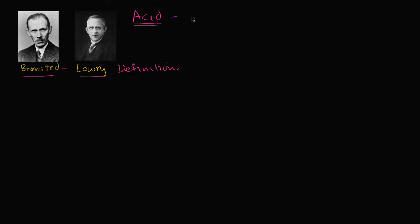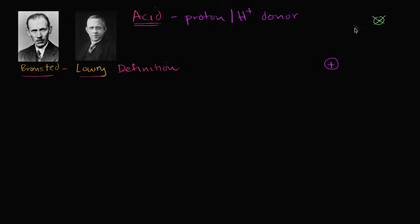According to them, an acid is a proton — or hydrogen ion — donor. Why is a proton and a hydrogen ion the same thing? Well, in the most common isotope of hydrogen, its nucleus contains just a proton and no neutron. If it's neutral, you have an electron in its orbital. But if you ionize it, you remove that electron, and all you're left with is a proton. That's why a proton and H+ usually refer to the exact same thing.